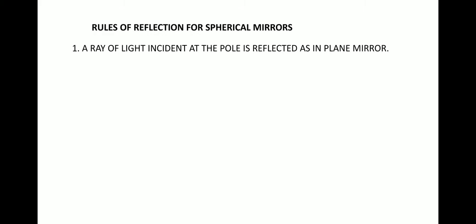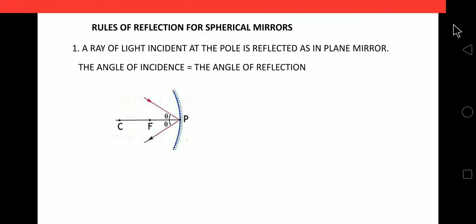Rule number one: a ray of light incident at the pole is reflected as in a plane mirror, meaning the angle of incidence is equal to the angle of reflection. Whenever you are drawing ray diagrams you need to make the arrows. This is a concave mirror, and here is the principal axis and the pole. C is the center of curvature, F is the focus. When light comes as a ray and strikes the mirror it's called the incident ray, and once it strikes the surface and reflects back it's called the reflected ray.